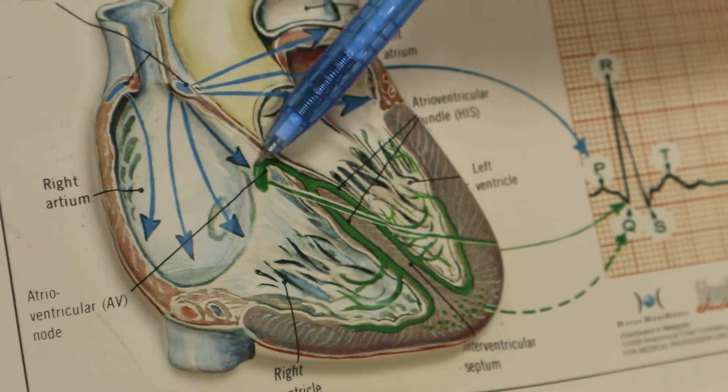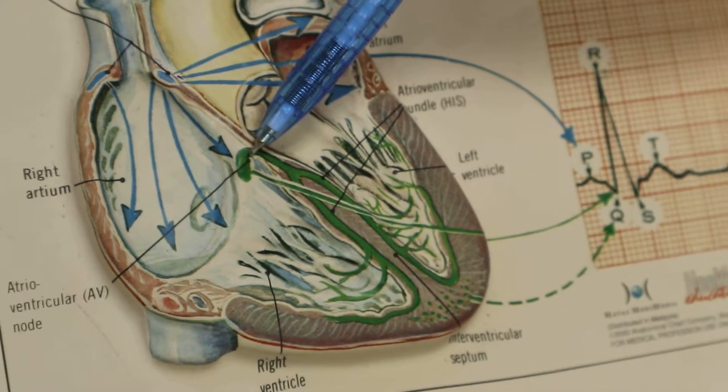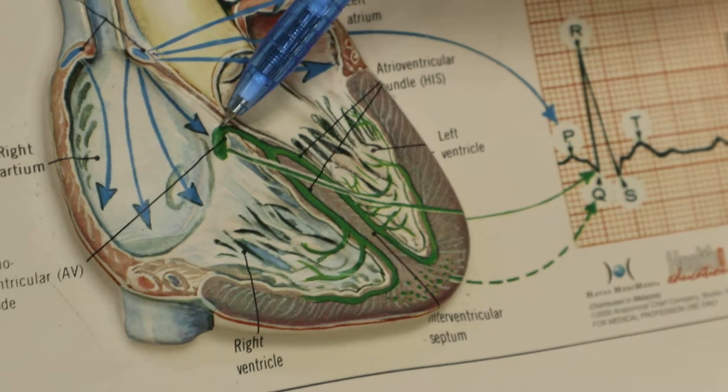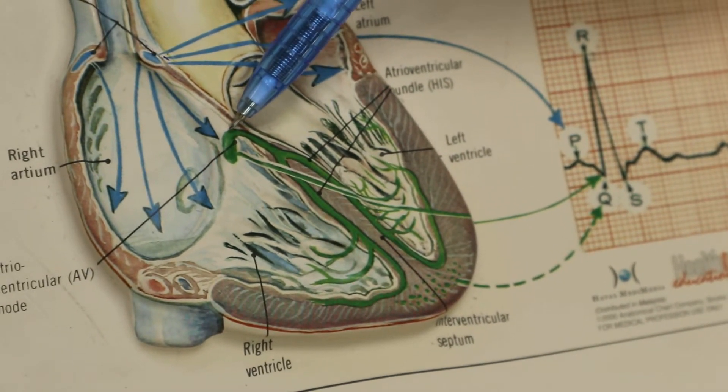The waves then pass to a different node called the atrioventricular node. Here, the waves are delayed to allow ventricular filling.